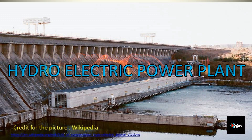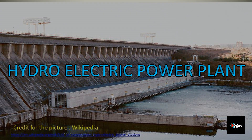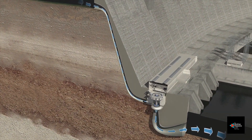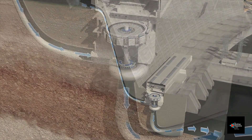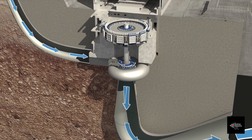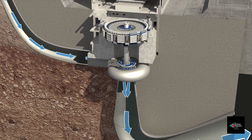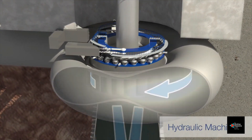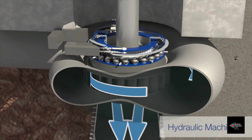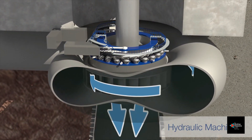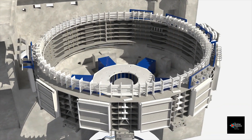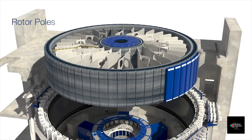Hydroelectric power stations use falling water to produce electric power. Hydroelectric power plants usually have dams that block water from freely flowing on its normal path. Instead, water flows through a small narrow passageway. As the water is forced through this narrow passage, the flow speeds up and is forced through a turbine, which spins as the water rushes through it. The turbine is connected to a generator shaft which turns the generator and creates electrical current.